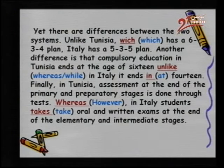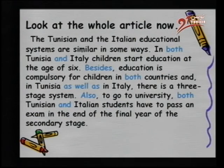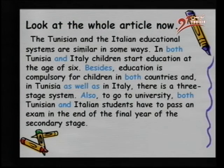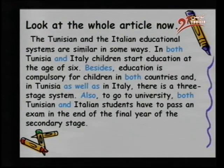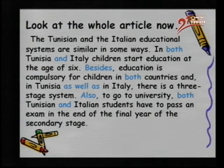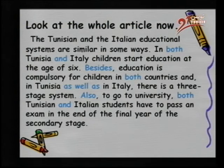Now, look at the corrections. Look at the whole article now. Let's read it together. The Tunisian and the Italian educational systems are similar in some ways. In both Tunisia and Italy, children start education at the age of six. Besides, education is compulsory for children in both countries. And in Tunisia, as well as in Italy, there is a three-stage system. Also, to go to university, both Tunisian and Italian students have to pass an exam at the end of the final year of the secondary stage.